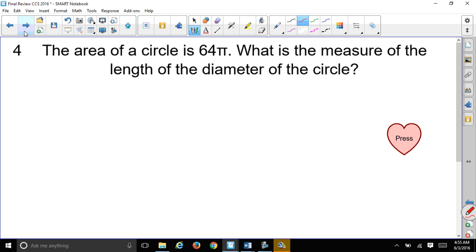Here's another question. The area of a circle is 64π. What is the measure of the length of the diameter of the circle? So we have a circle and it said the area of the circle is 64π. If you remember the formula for area, it's π times r, which stands for radius, squared.